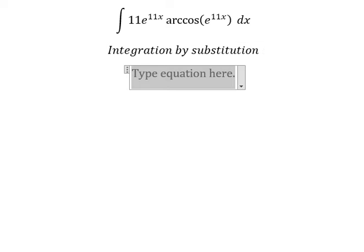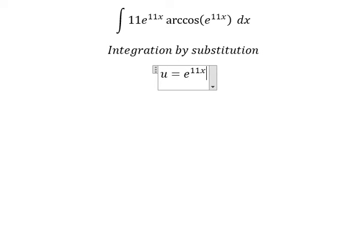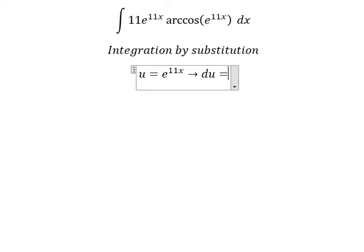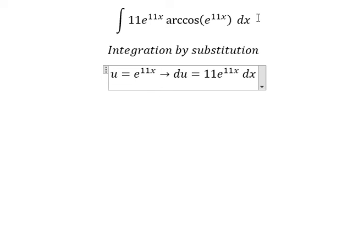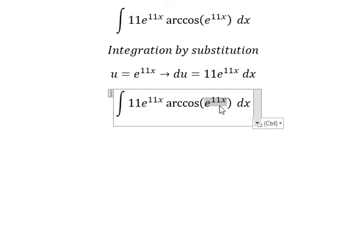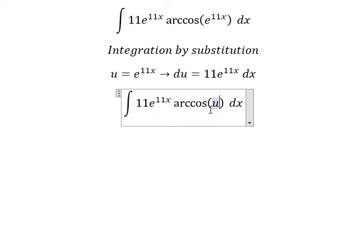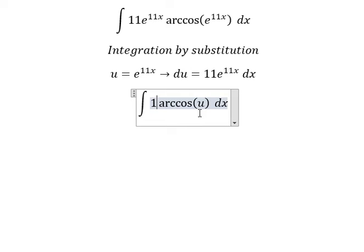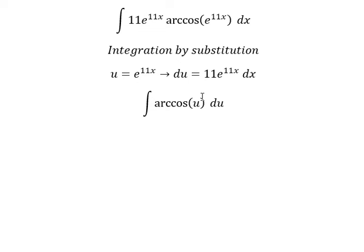I will put u equals to e to the power of 11s. If I do the first derivative for both sides, you get du equals to 11 e to the power of 11s ds. So this one will change to u, and ds will change to du. Now we need to use integration by parts.